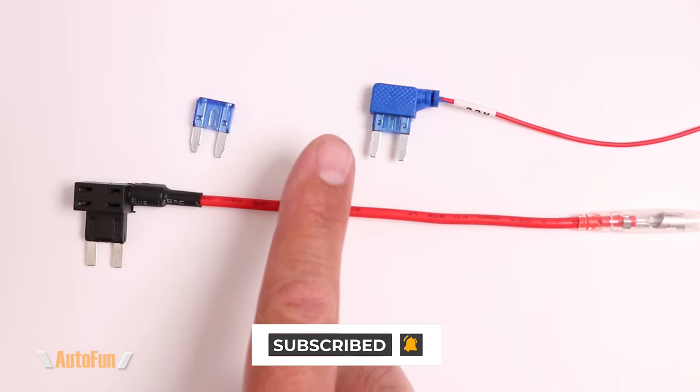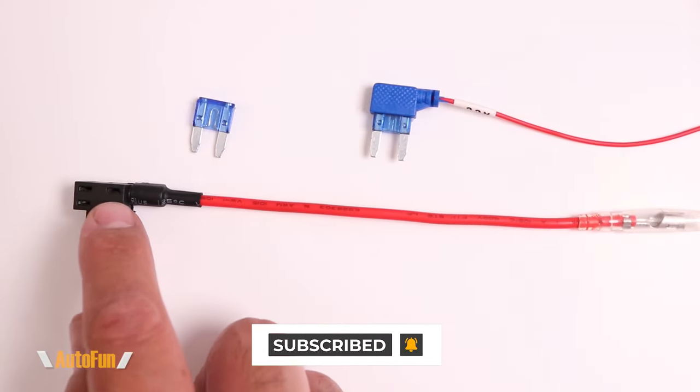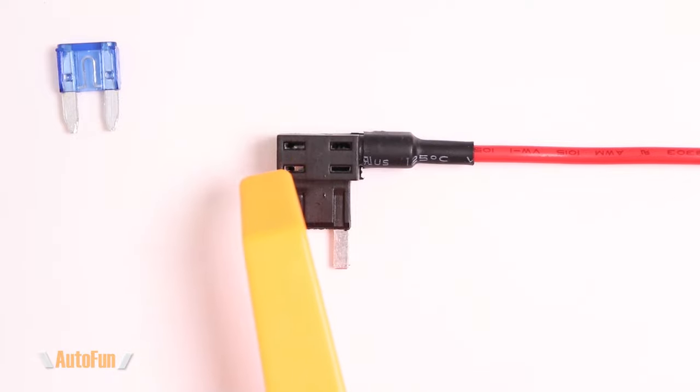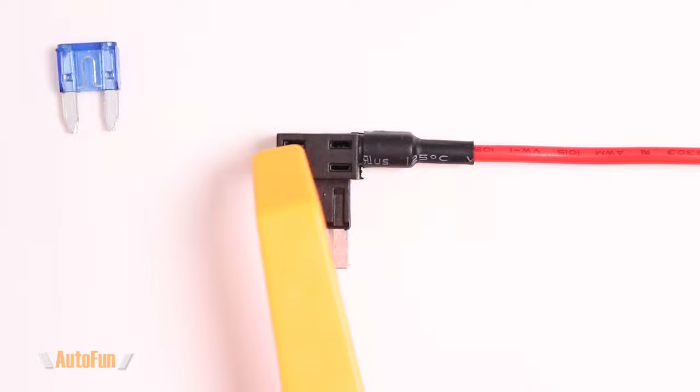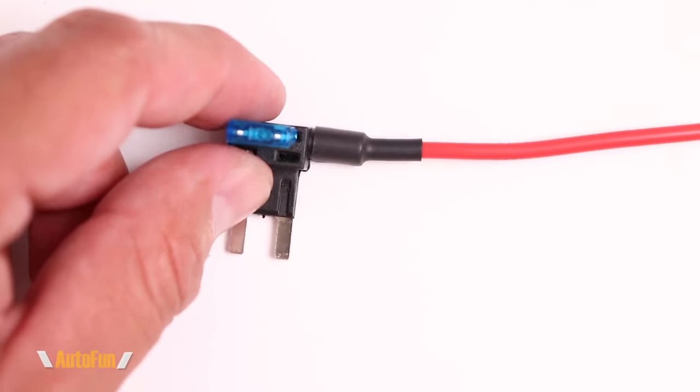On this close-up you can see how a fuse tab has two spaces for fuses: one space in the top and one space in the bottom. The space in the bottom is for the original fuse that was pulled from the vehicle. The space on the top is for the fuse for the dash cam.